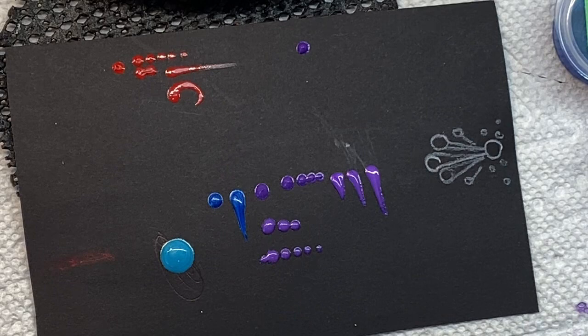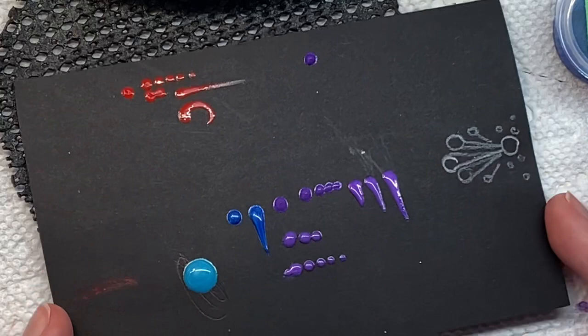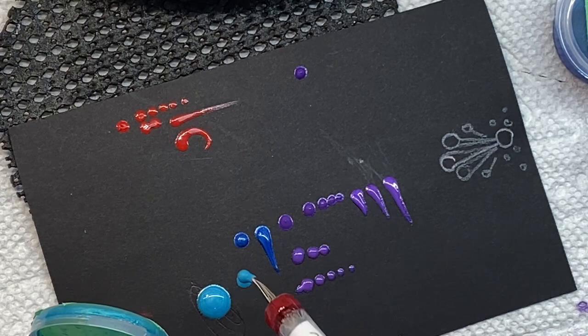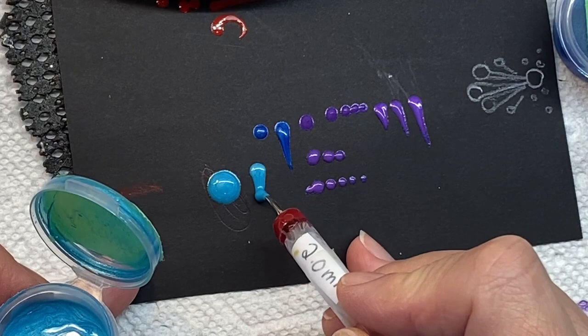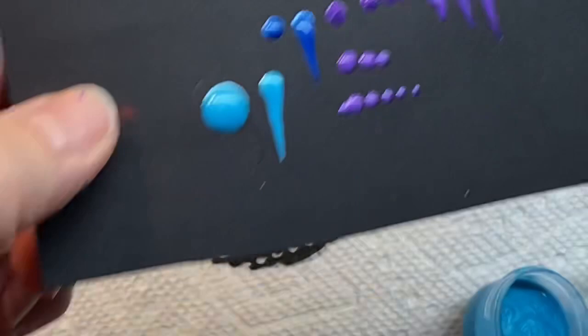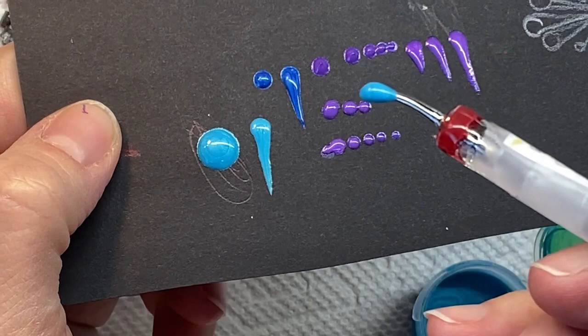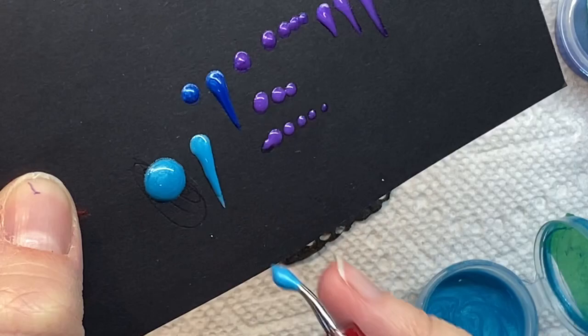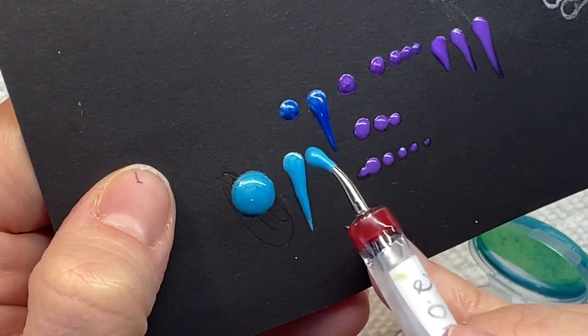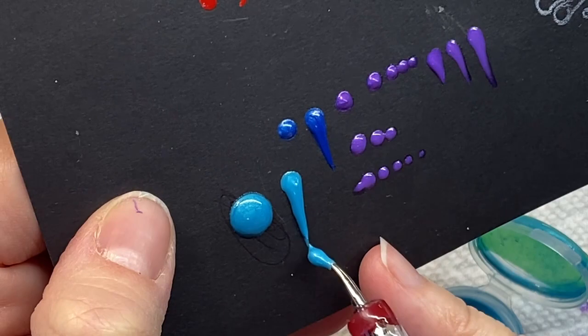You can also do this with your swooshes. It takes a little bit of practice. So the trick is to sort of load up that first dot and then drag it down. You get a nice looking swoosh and you can stop there if you like. Or if you want to go more dimensional, load up your stylus again and you're not actually really touching, you're just allowing the paint to flow off the tip of the stylus. You can keep doing that until you get the height and the look that you want.